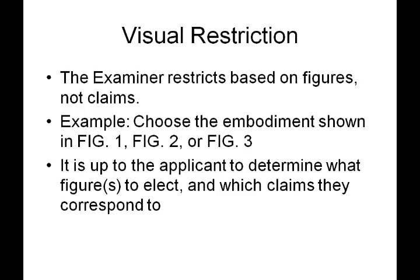There's one other thing to point out, which is a visual restriction. A visual restriction is when the examiner restricts based on figures, not claims. An example would be where you get a restriction saying you can either choose the embodiment shown in Figure 1, Figure 2, or Figure 3. The same strategy applies — it's up to the applicant to determine which figures to elect and which claims they correspond to. The same criteria apply: what's most germane to the business, and what has the most features or parts to work with to try to get something allowed.